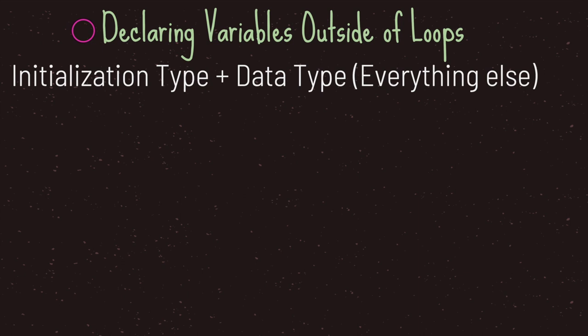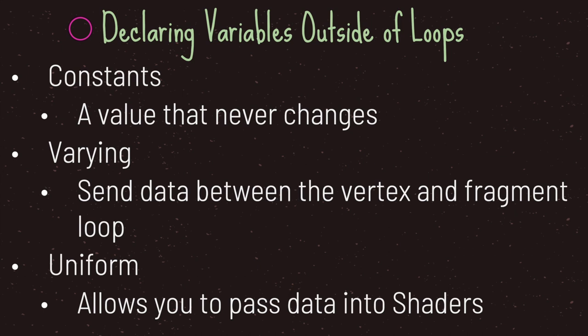When you want to declare variables outside of the vertex loop or the fragment loop, you need to do two things before naming your variables. The first is declaring the initialization type. The second is declaring the data type. After that you can name your variable and assign it a value. In shaders we have three different initialization types, declared outside of the fragment and vertex loops.